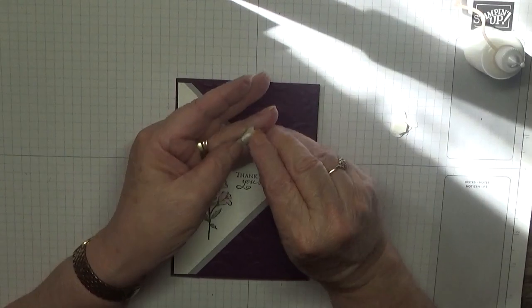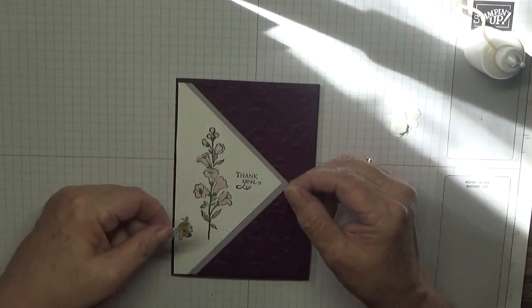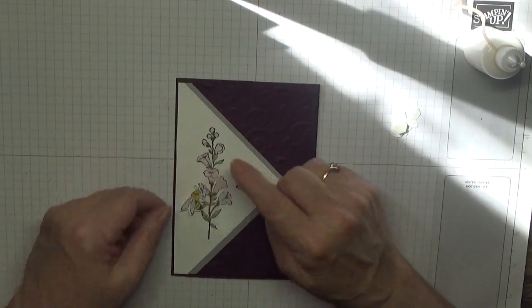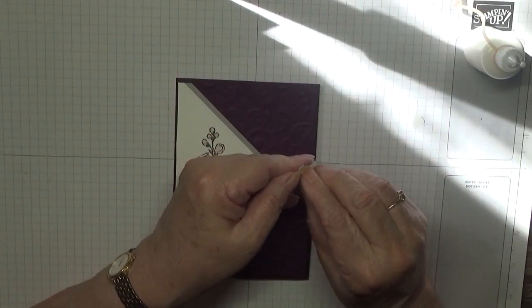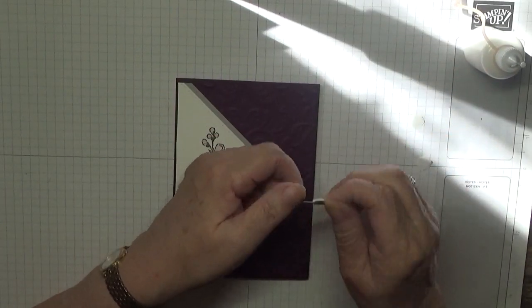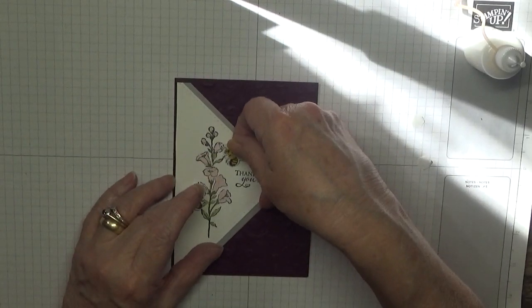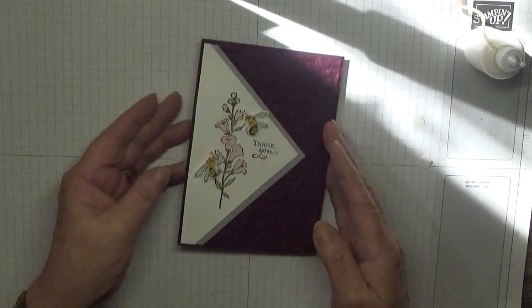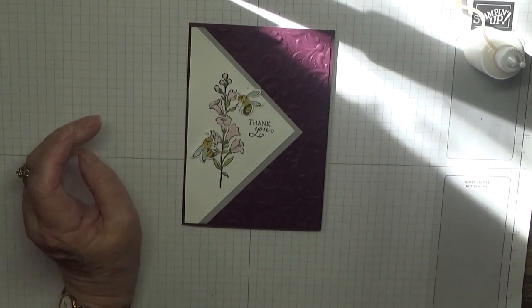And our little bees. We are going to put one on this flower, approaching that flower, and one coming in to land here. And that is our card done for today.